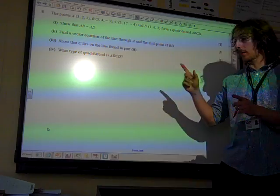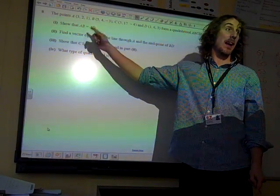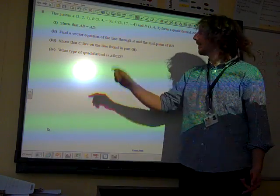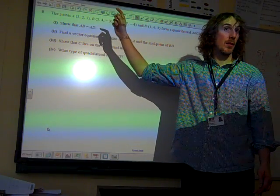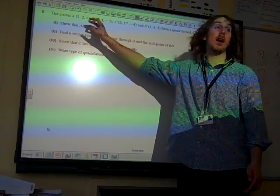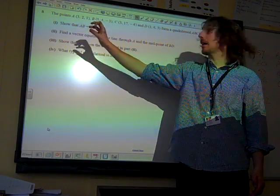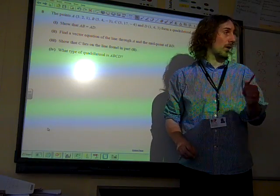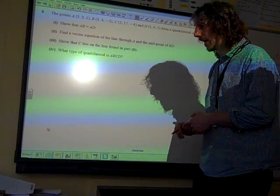Show that AB equals AD. Now, the first thing to note here is that this isn't saying that the vector A to B is the same as the vector A to D, because if it did, they'd put little arrows over it. So this is saying that the length of the line AB is the same as the length of the line AD. So this is to do with lengths.